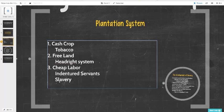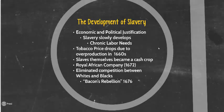By the late 1670s, West African slavery was completely institutionalized as the labor force. Slavery slowly develops out of chronic labor needs. We begin to see the price of tobacco drop due to profits falling in this boom-bust economy. There was an epidemic of overproduction by the 1660s. Slaves themselves would slowly begin to become a cash crop, which is fortified when the English get into the slave trade in 1672.